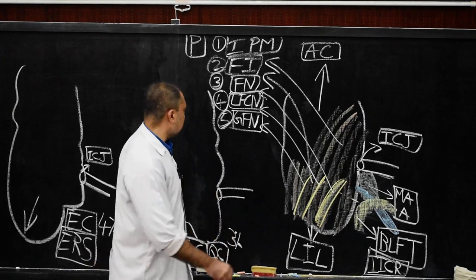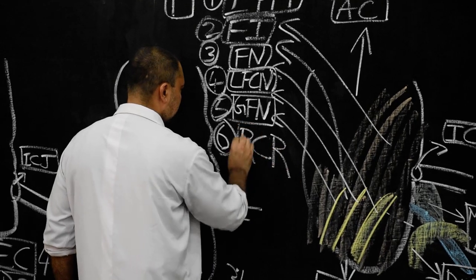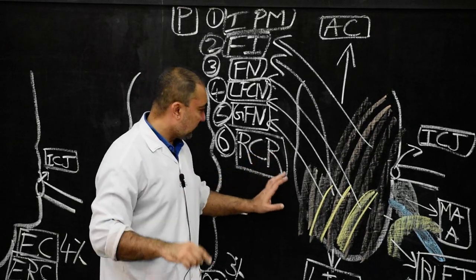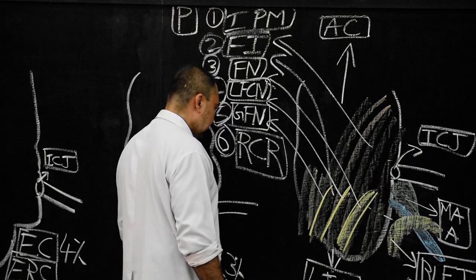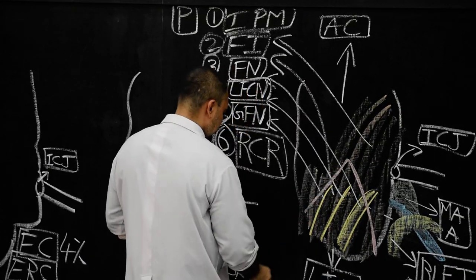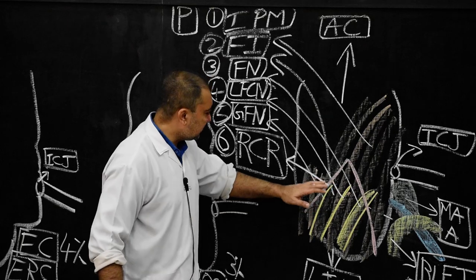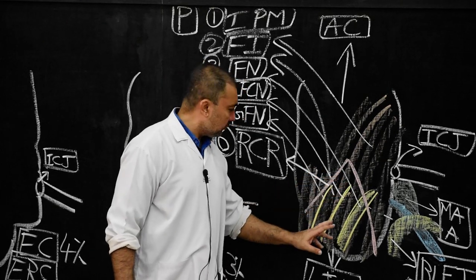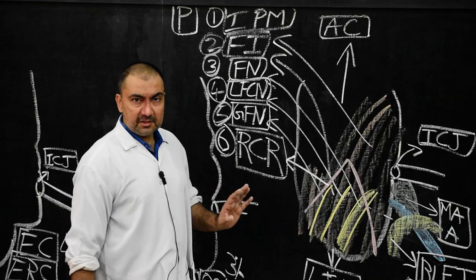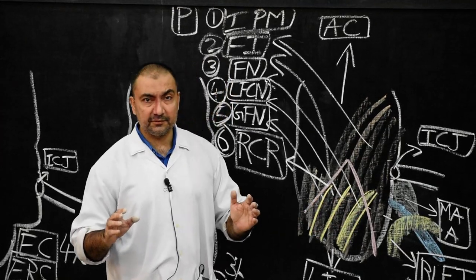The last structure is the retrocecal recess, and sometimes along with the retrocecal recess you will find retrocecal appendix also. This is the fold of retrocecal recess, present just posterior to the cecum, where you may find the retrocecal arrangement of the appendix. So these six structures are related with the posterior surface of the cecum. Here we finish the types of cecum and relations of cecum. Thank you very much.